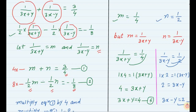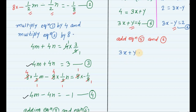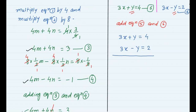Now we need to find x and y from equations 5 and 6. Equation 5 has plus y and equation 6 has minus y, so we add them. Adding: 3x plus y equals 4 and 3x minus y equals 2. The y terms cancel, giving 6x equals 6, therefore x is equal to 1.